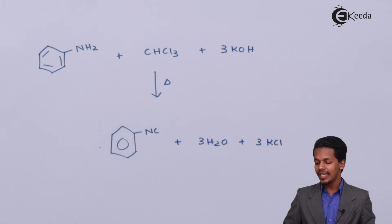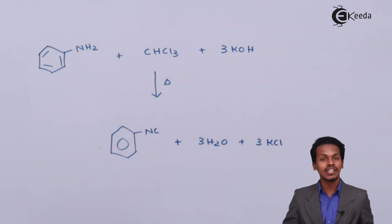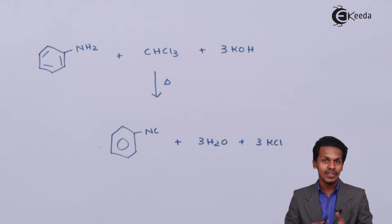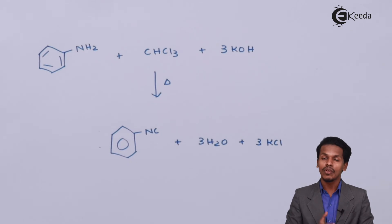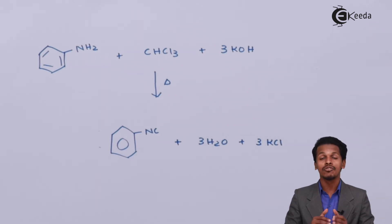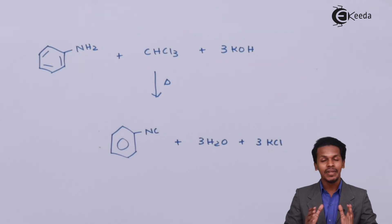This overall reaction — whether using an aliphatic or aromatic primary amine — is known as the Hofmann Carbylamine reaction. This reaction is positive only for primary amines and is not positive for secondary or tertiary amines.